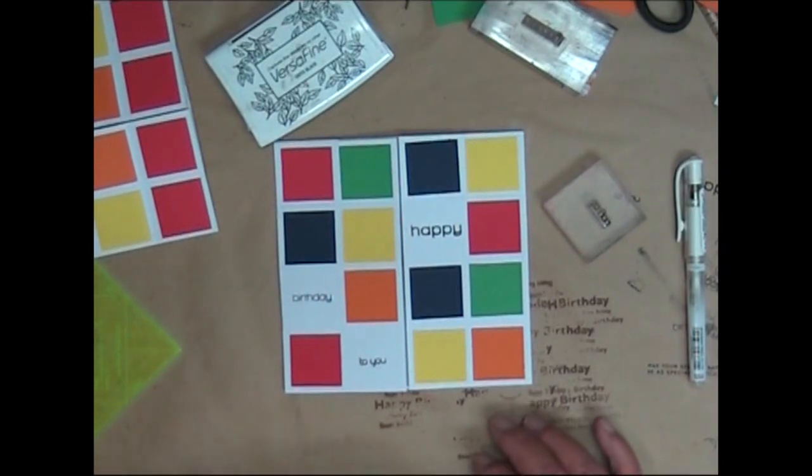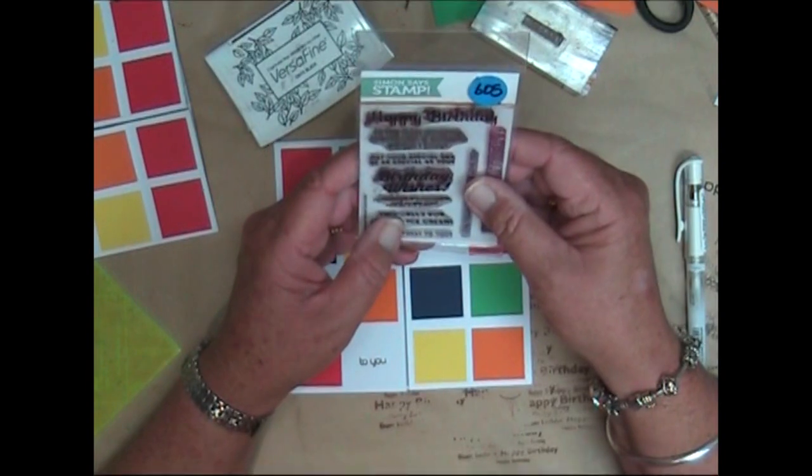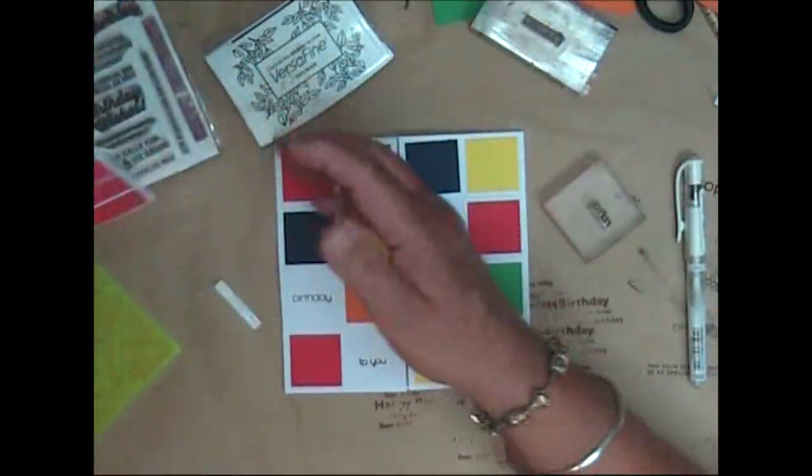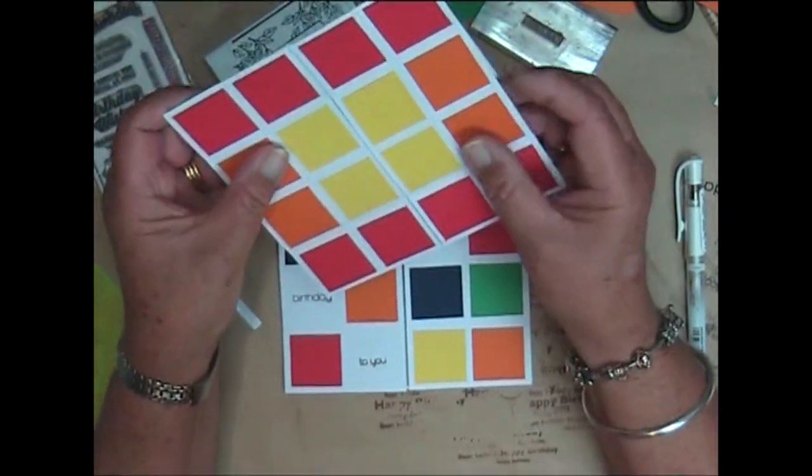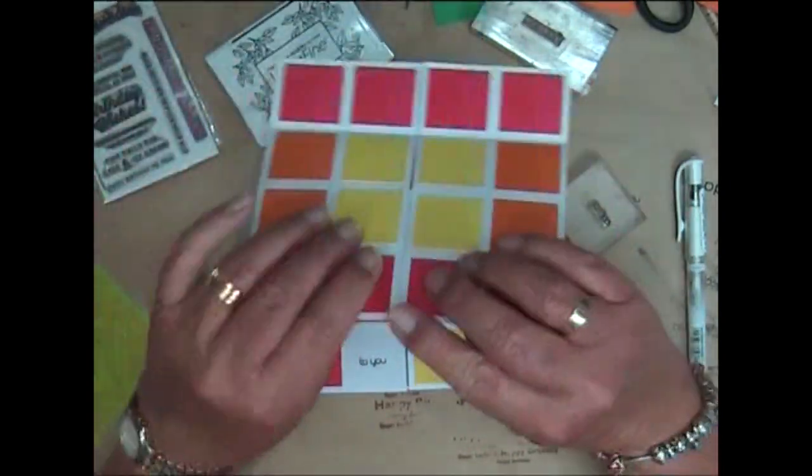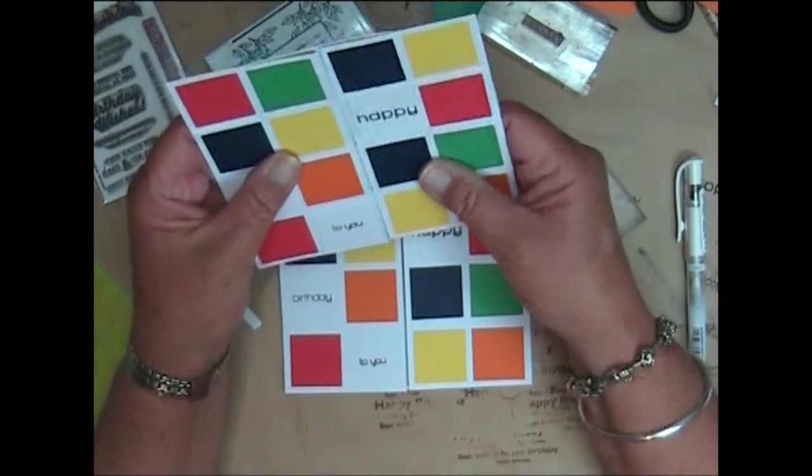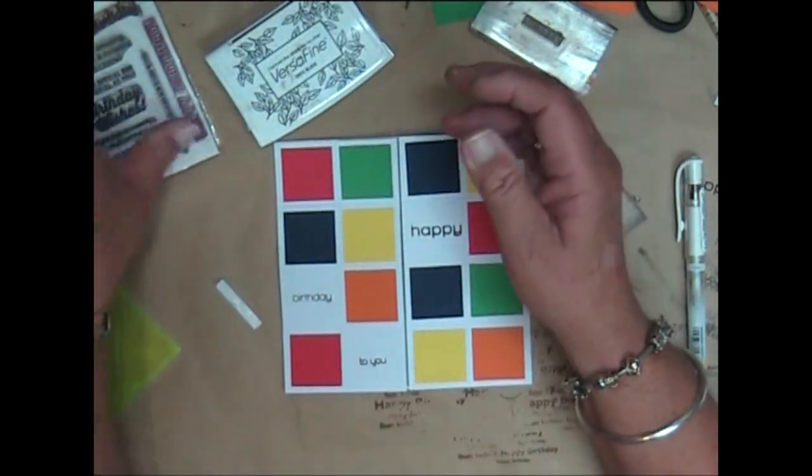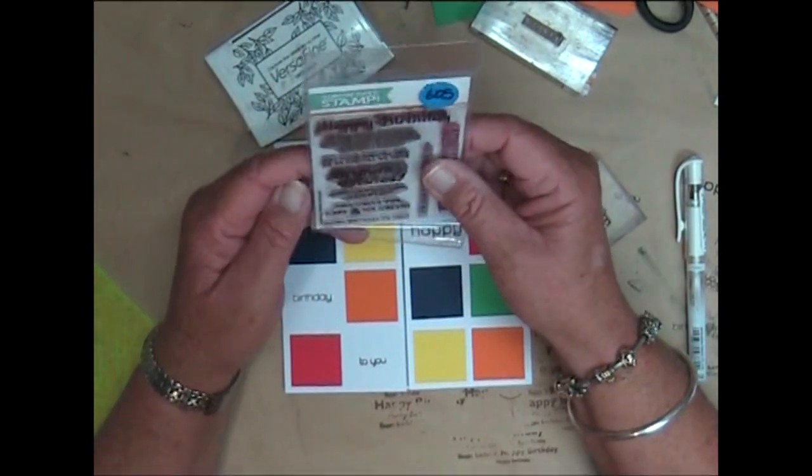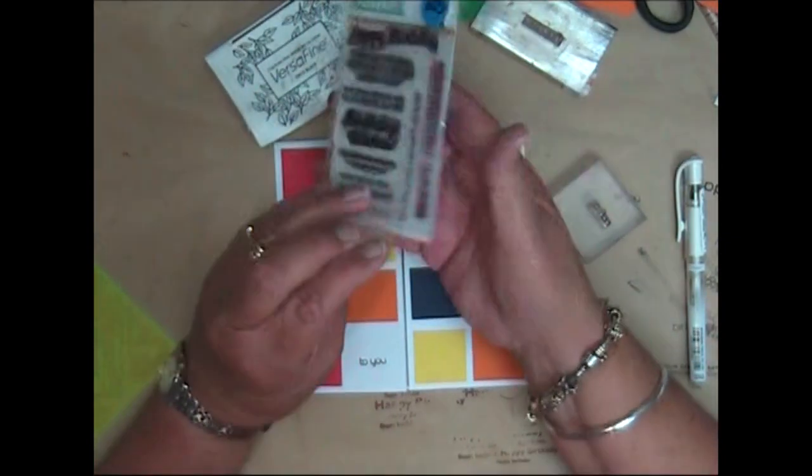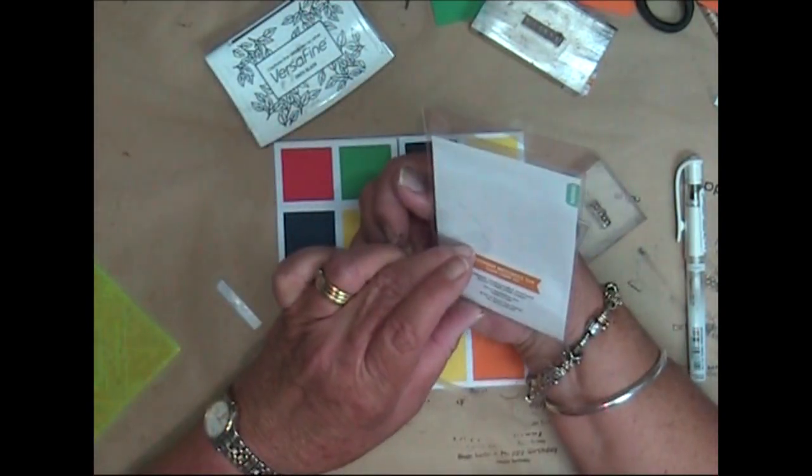All right, when it dries, we need to do the inside sentiment now. Which one was that one? Right, which one? Oh okay, it's again another Simon Says Stamp set. And what do I put on this one? I put, may your special day be as special as you, or I could put to the most amazing, spectacular, and fantastic person I know. And I think I'm going to use that one instead. This set's called Birthday Messages.